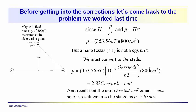We're going to talk about corrections that you need to make to your magnetic data — the magnetic data that you collect in the field. But first we're going to back up for a minute and come back to that problem where you had a dipole and at a point 20 centimeters away from the axis of the dipole, a magnetic field intensity of 500 nanoteslas was measured, and you were asked to figure out what the pole strength was. We went through this part and basically stopped right here.